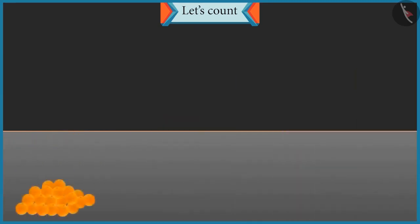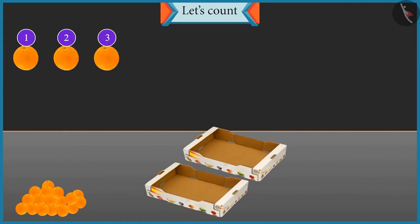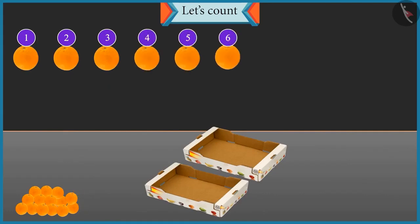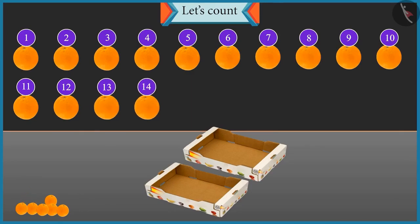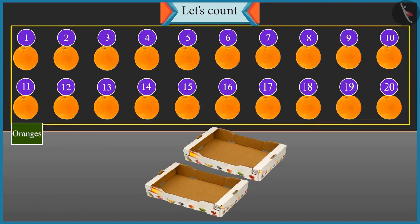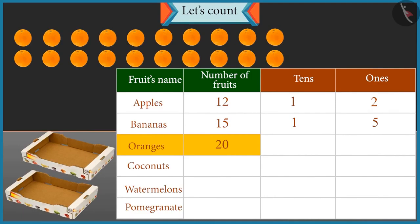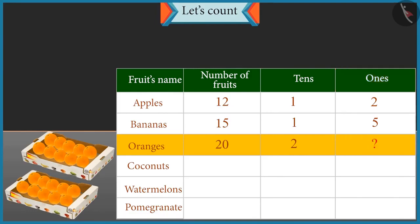Now let's count these oranges and place them in the box. One, two, three, four, five, six, seven, eight, nine, ten, eleven, twelve, thirteen, fourteen, fifteen, sixteen, seventeen, eighteen, nineteen and twenty. There are twenty oranges. Well done. Now tell me how many tens are there in twenty? With twenty oranges, two groups of ten oranges will be formed, so there are two tens. And how many ones are there in twenty? There are no oranges left, so the number of ones is zero. Well done, Chotu.